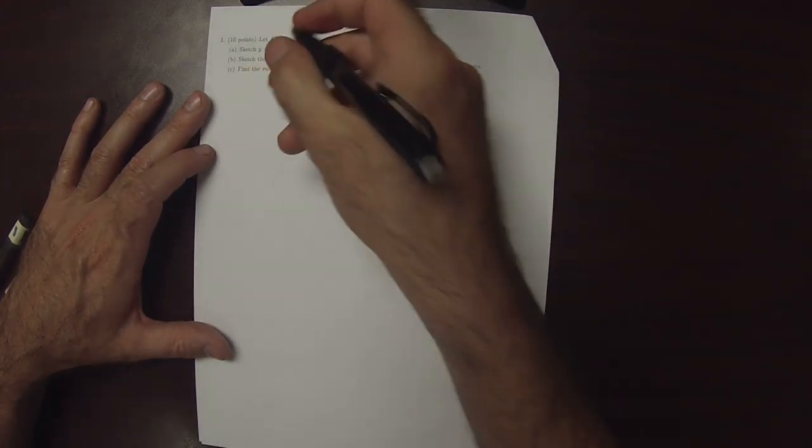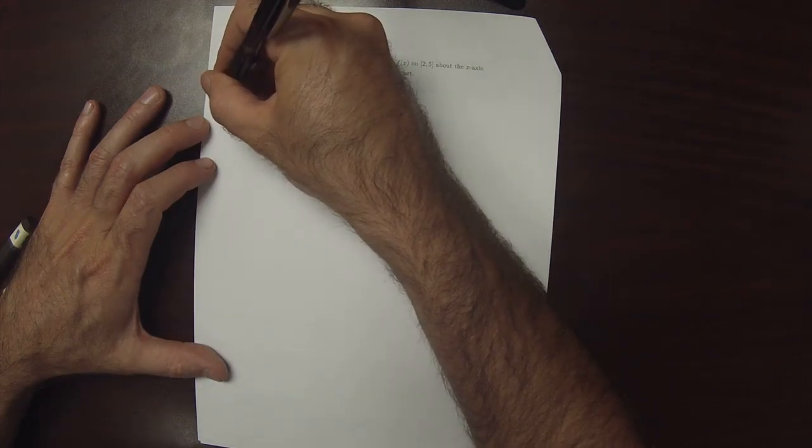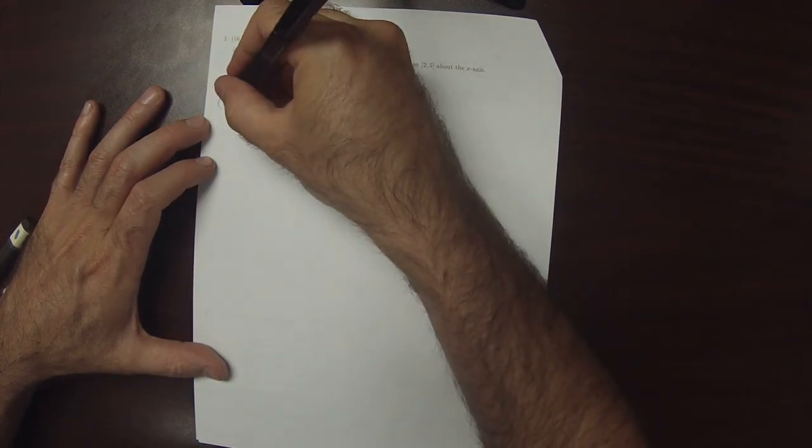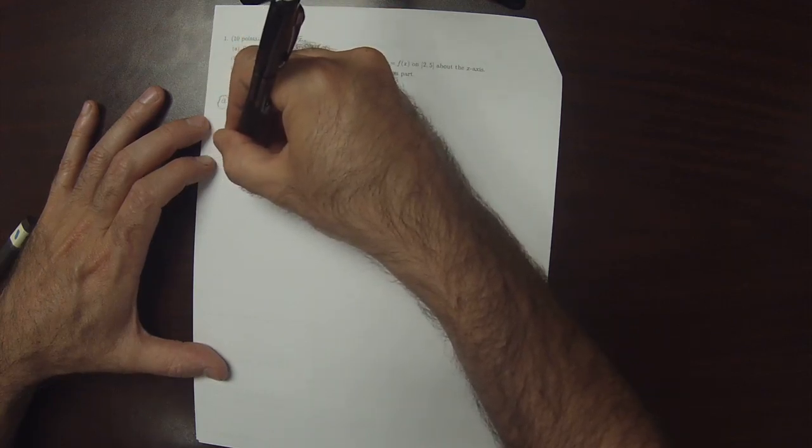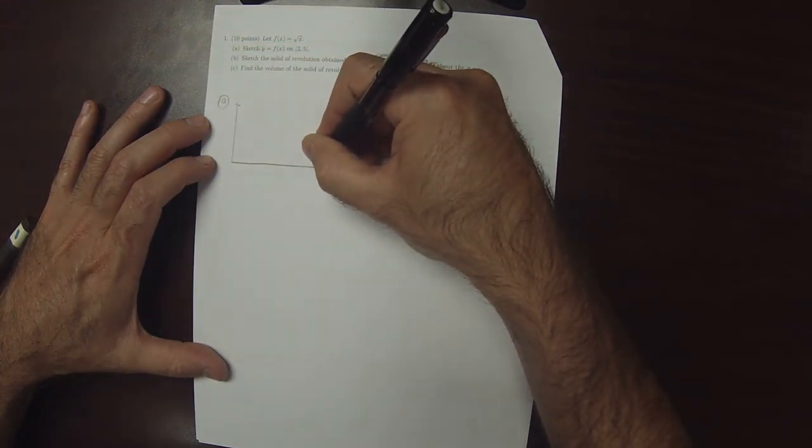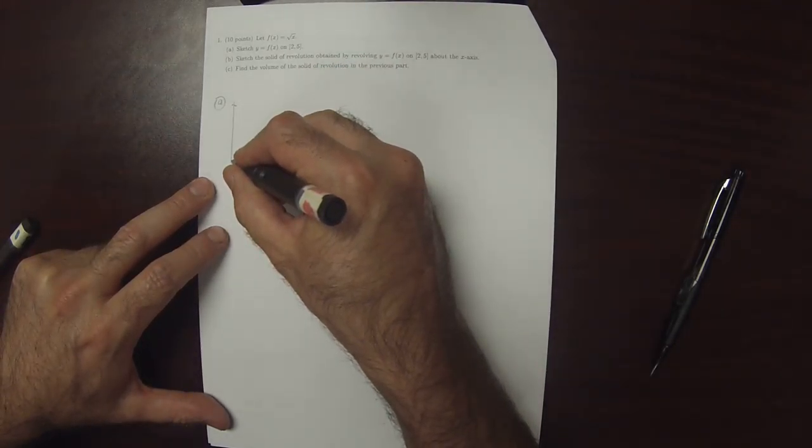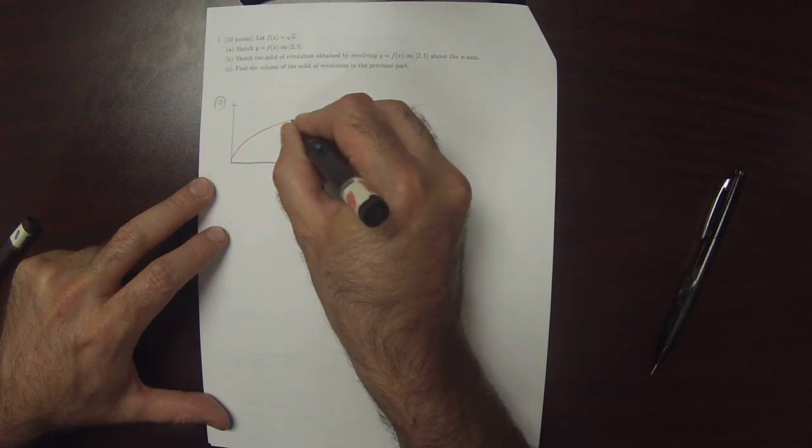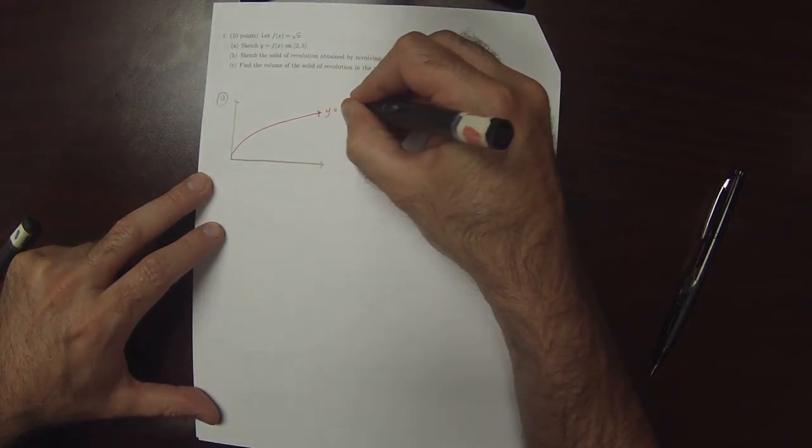part a, sketch the function on 2 to 5. So for part a, square root of x, looks something like this.